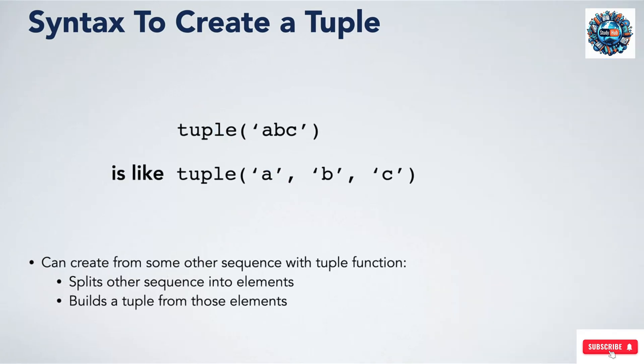You can also create a tuple from any other sequence of elements by calling the tuple function. The tuple function will get each element out of the sequence that was passed to it, and build a tuple from those elements. For example, if we do tuple of string ABC, then the tuple function gets each letter from the string, and builds a tuple with three elements, A, B, and C.